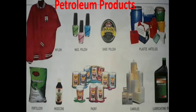Fine wax obtained from petroleum is used to make candles, waterproof curtains and polish. Some petroleum products include nylon, nail polish, shoe polish, plastic articles, fertilizers, medicine, paint, candles and lubricating oil. The main use of petroleum is as fuel in different forms — we get LPG, CNG, petrol, diesel and kerosene from petroleum.